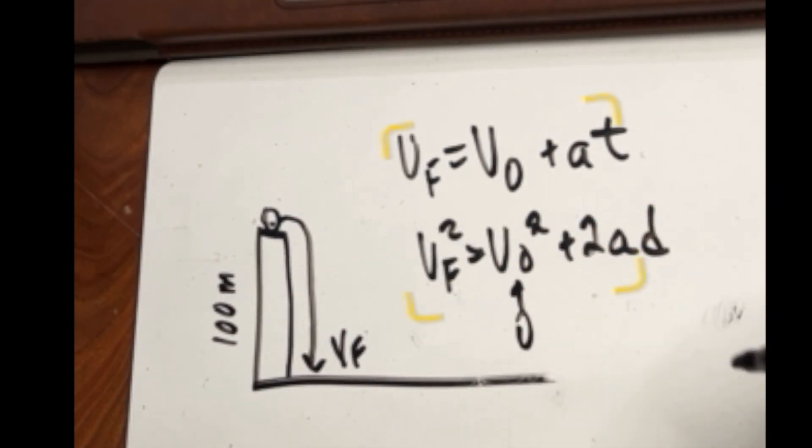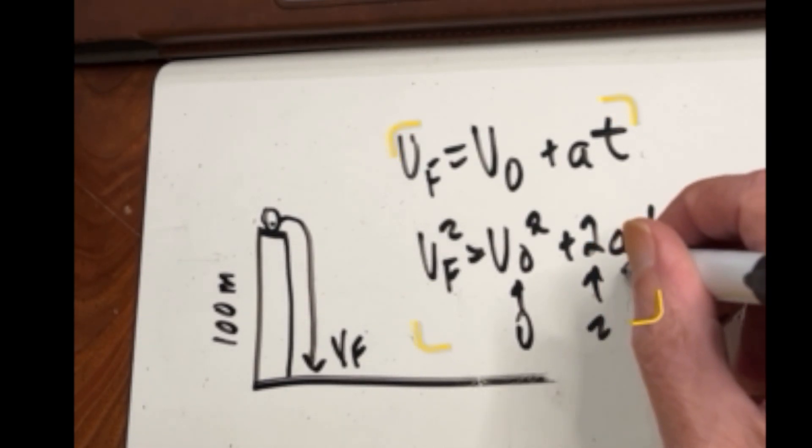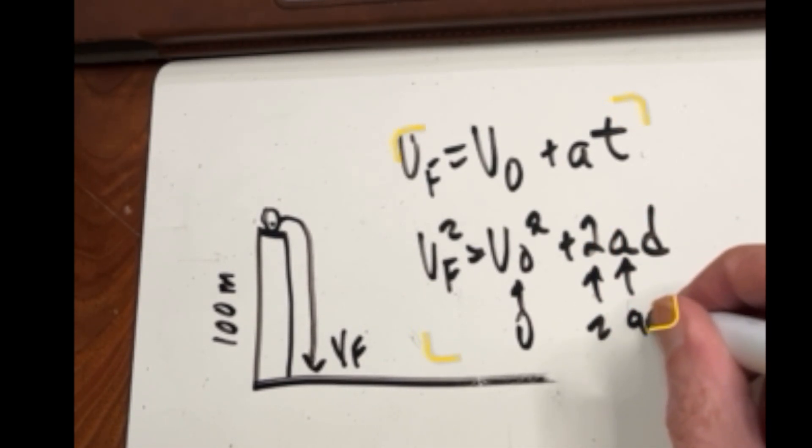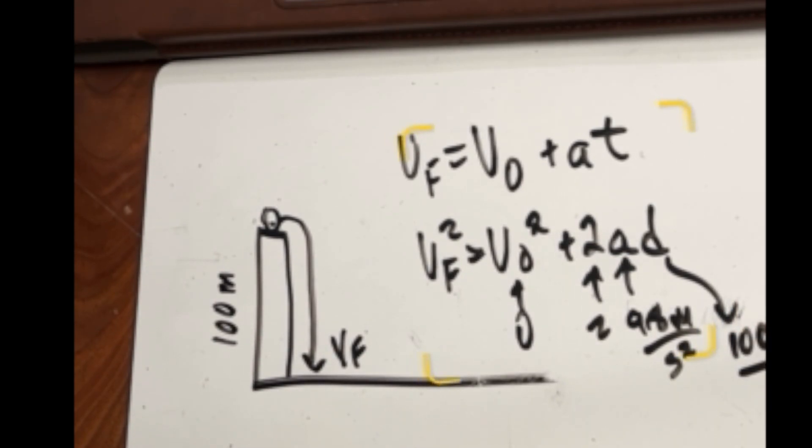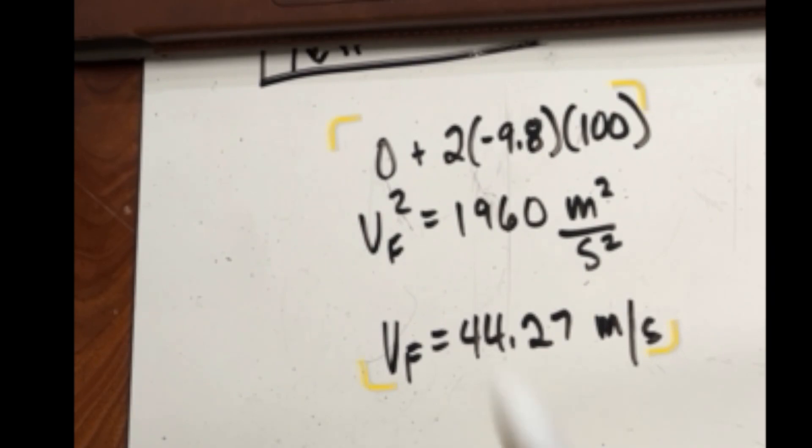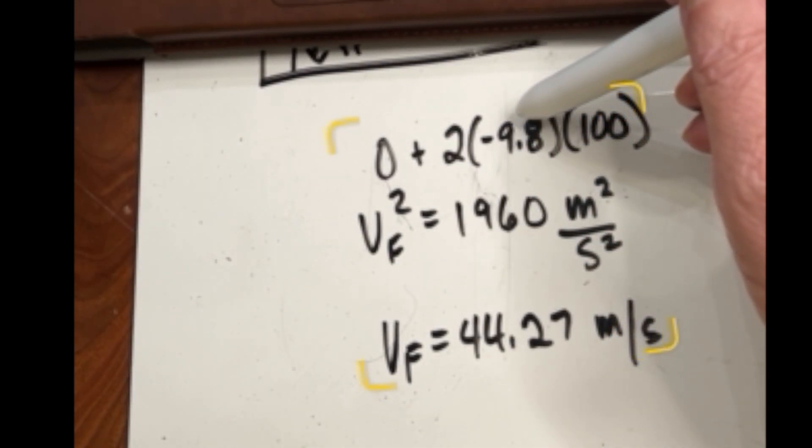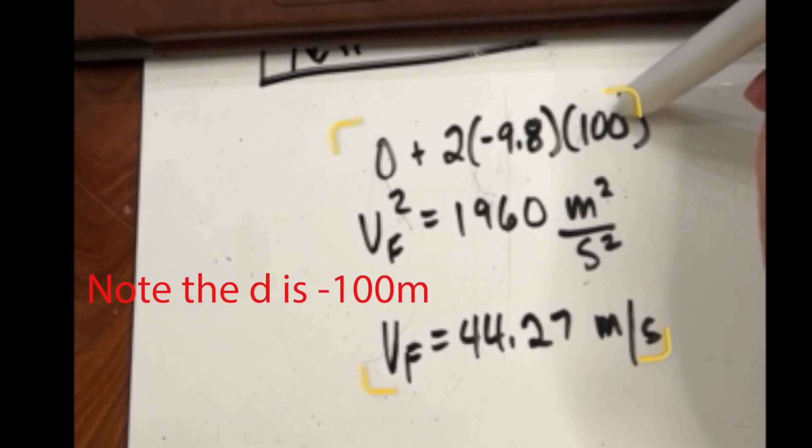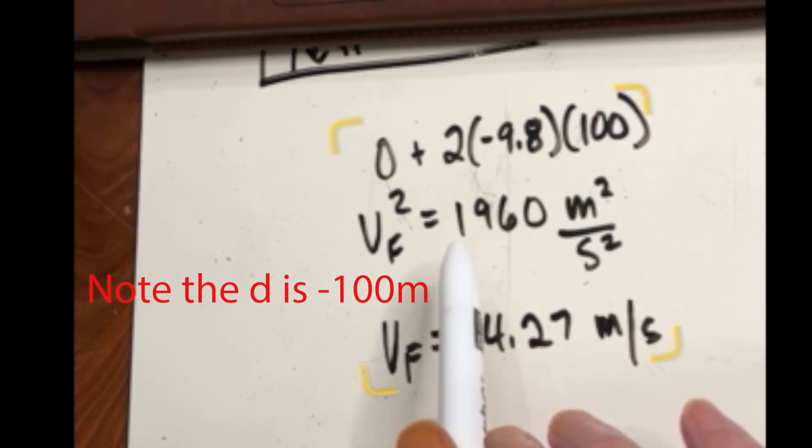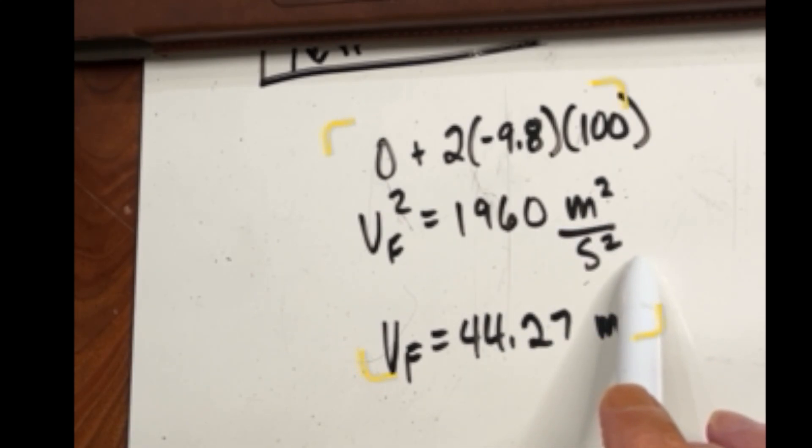So what do we know here? We know the initial velocity is zero. We know that 2 equals 2. We know acceleration is 9.8 meters per second squared and most importantly we know the distance is 100 meters. We're ready to solve this. So what do we have here? Our initial velocity was zero. We have 2 times negative 9.8 meters per second squared times 100 meters. That equals 1,960 meters squared over seconds squared and that is the final velocity squared. Take the square root of both sides. We get final velocity equals 44.27 meters per second and we are done and dusted as my friend Psyman Dan likes to say.